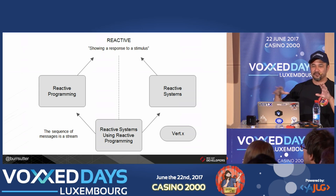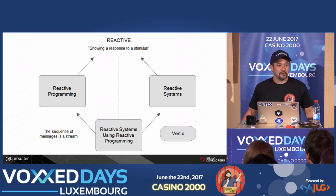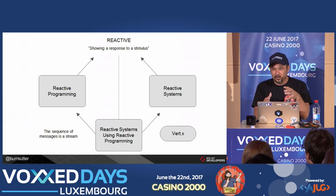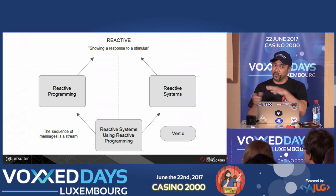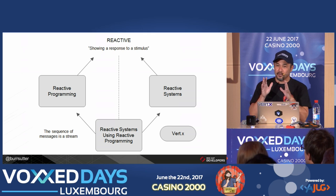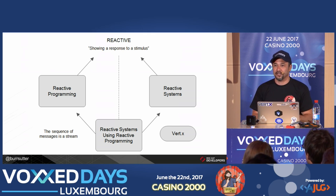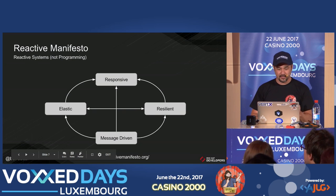There are two types of reactive — it's an overloaded term. A lot of people focus on reactive programming using something like RxJava or Project Reactor, which is all about the programming model. But there are also reactive systems, and reactive systems can be done with or without reactive programming. We want to focus more on reactive systems and reactive infrastructure, because that's where you get more bang for the buck from an enterprise, mission-critical standpoint.